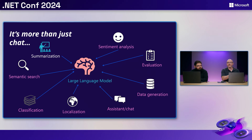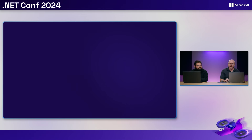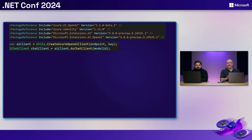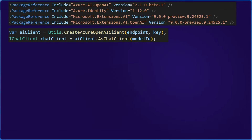Let's assume we want to take advantage of summarization. What do we do from scratch to add that to our application? The first thing is to add a couple of packages — you can use the command line, NuGet manager, or your .csproj file. I've added the OpenAI package for the model and Microsoft.Extensions.AI. You can use different services, and I'm also creating an IChatClient using an extension method.